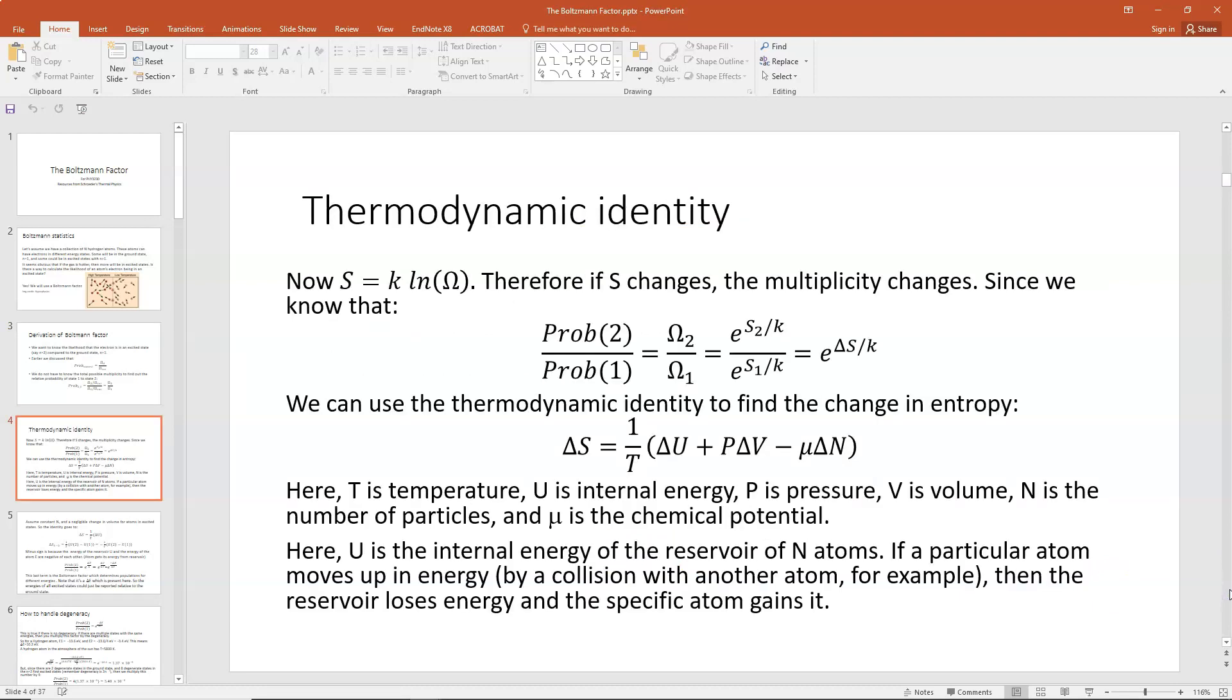Now, let's go with the definition of entropy where S = k times the natural log of omega. This is the most basic definition of entropy. What that means is, of course, that the entropy, a change in the entropy, means the multiplicity changed. We could also say, solving for omega, that omega is equal to e to the S/k power, just raising both sides to the power of e.